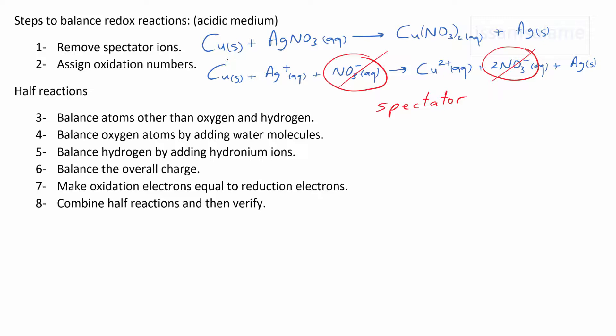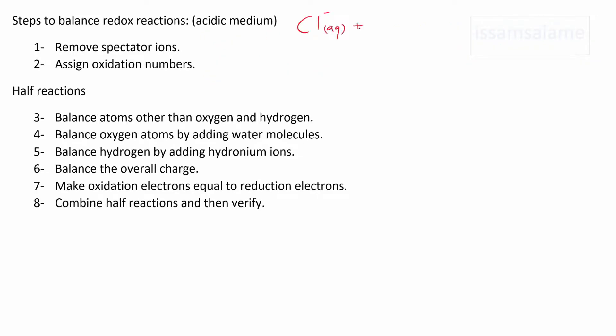For the second step, which is how to assign the oxidation number, I'm going to keep a link in the description for a video teaching you how to assign the oxidation number of all the atoms in a reaction. Like here, the oxidation number of copper atom is zero, for silver ion it's plus one, for copper ion it's plus two, and for silver atom it's zero.